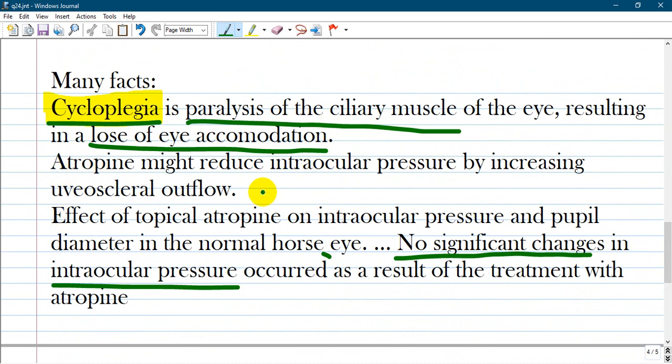And many sources give different information, but many of them state that atropine might reduce intraocular pressure or cause no significant changes in intraocular pressure.